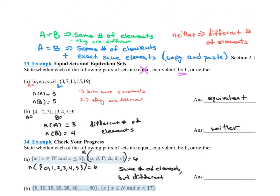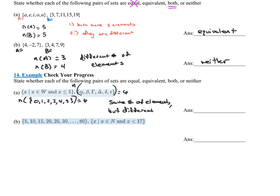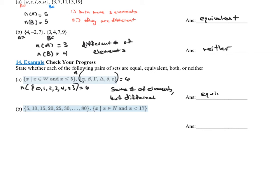Let's look at the next one: 5, 10, 15, 20, 25, 30 all the way up to the number 80, and then X such that X is an element of the natural numbers and X is less than 17. If we wanted to know the number of consecutive numbers, we would do 80 minus 5 and then plus 1, high minus low plus 1. But these aren't consecutive, these are consecutive numbers divided by 5. So what we're going to do is 80 minus 5 divided by 5 plus 1, because each one of those numbers is a multiple of 5. That gives me a total of 16 elements.